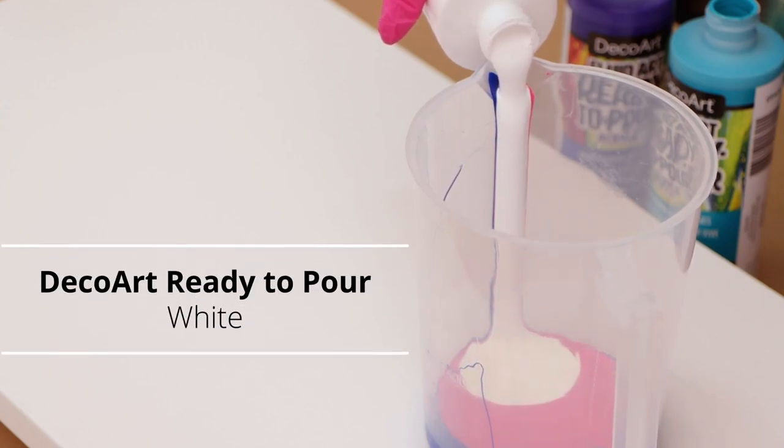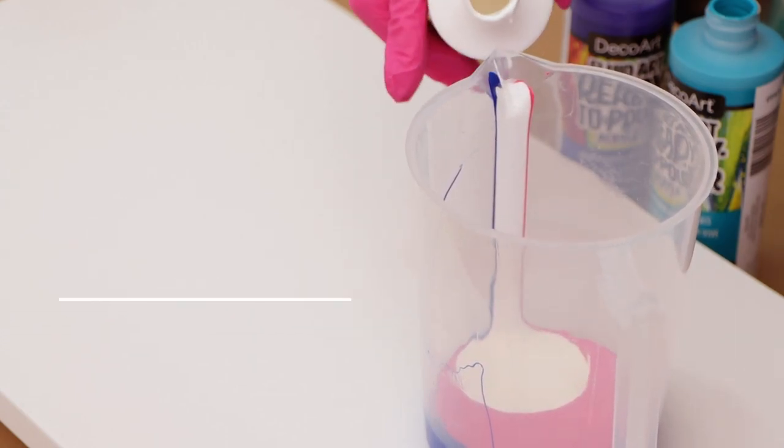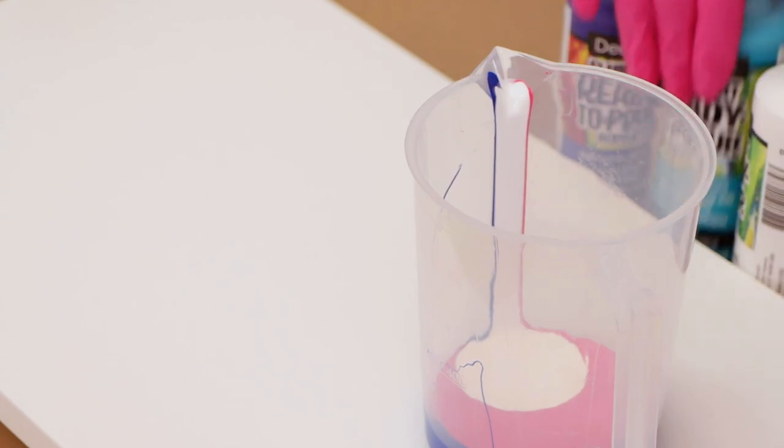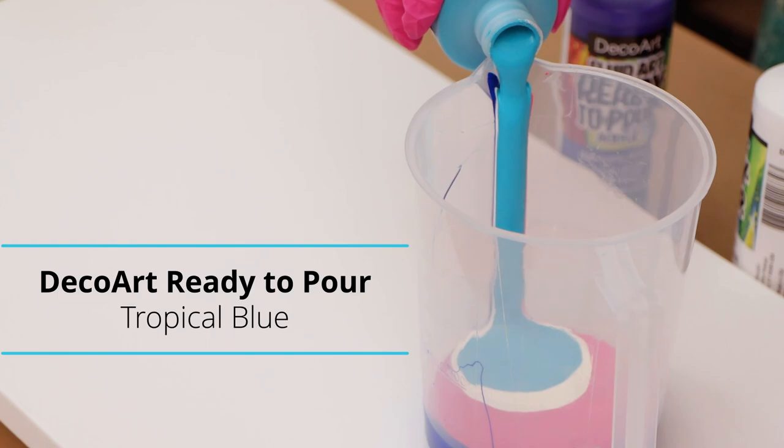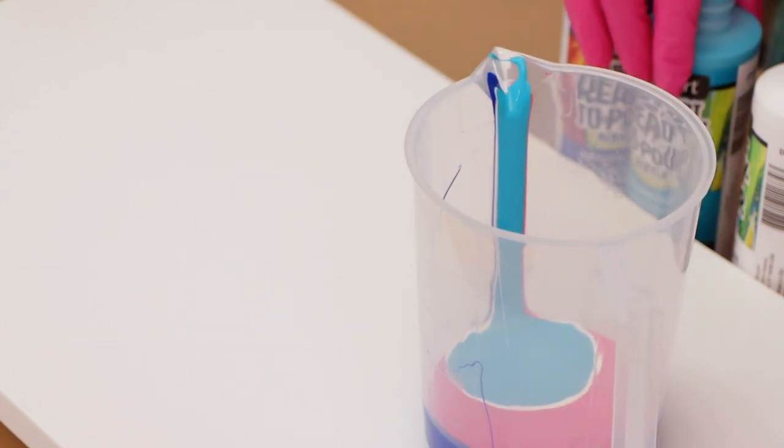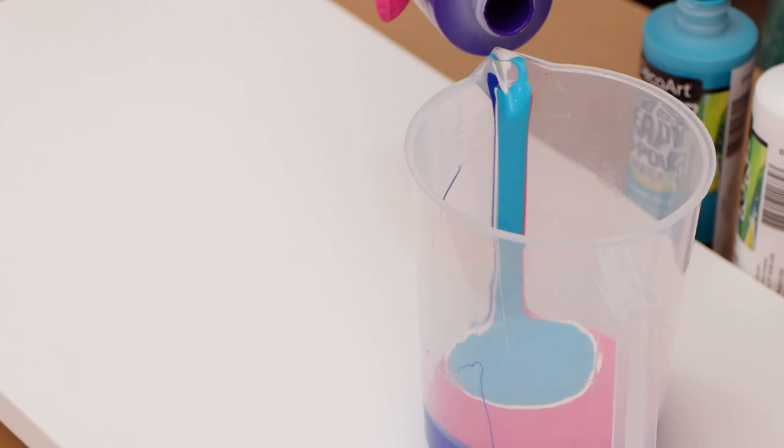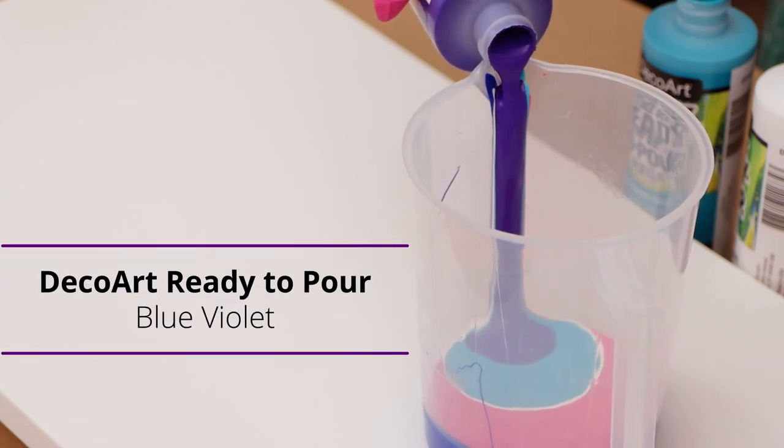Alright, and this one is white. Got to put a little bit of that in there. And now we've got some tropical blue. It's a really pretty turquoise color. And then the last color that I'm using is called Blue Violet.